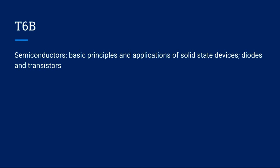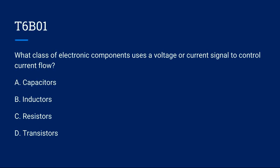Moving right along. T6B covers semiconductors: basic principles and applications of solid-state devices, diodes, and transistors. T6B01: What class of electronic components uses a voltage or current signal to control current flow? A, capacitors. B, inductors. C, resistors. Or D, transistors? The correct answer is D, transistors.